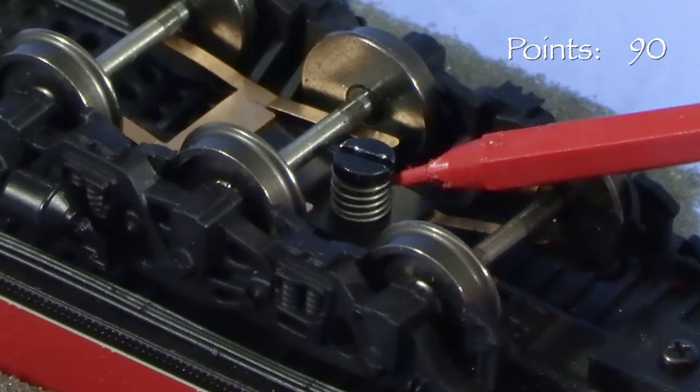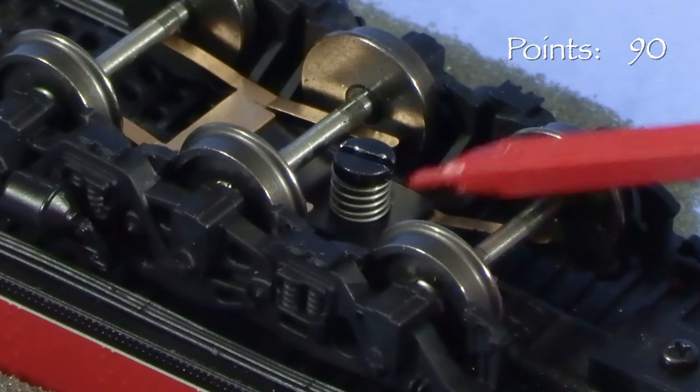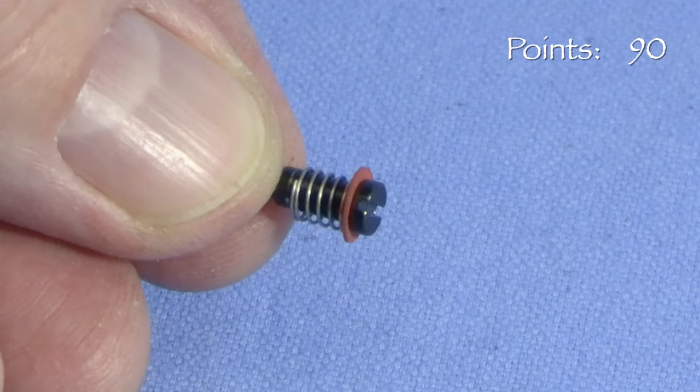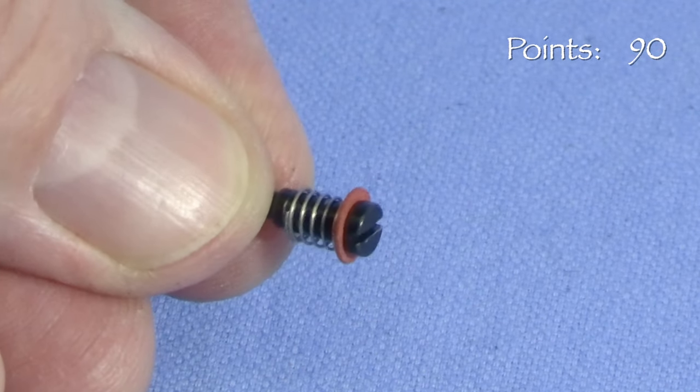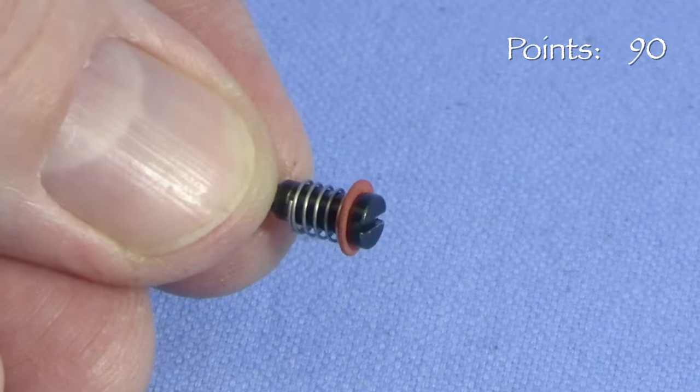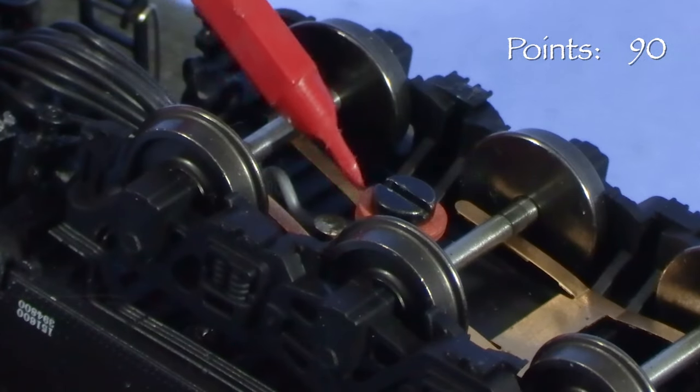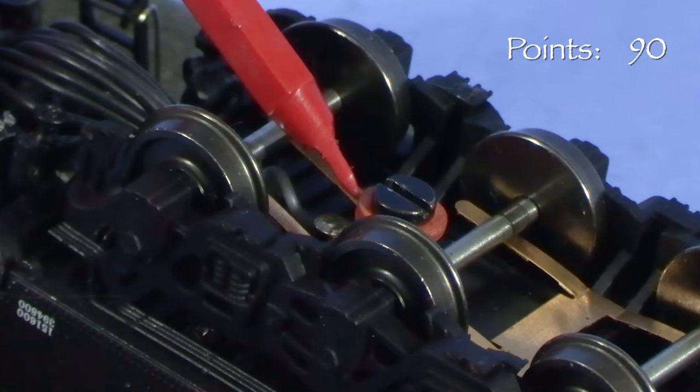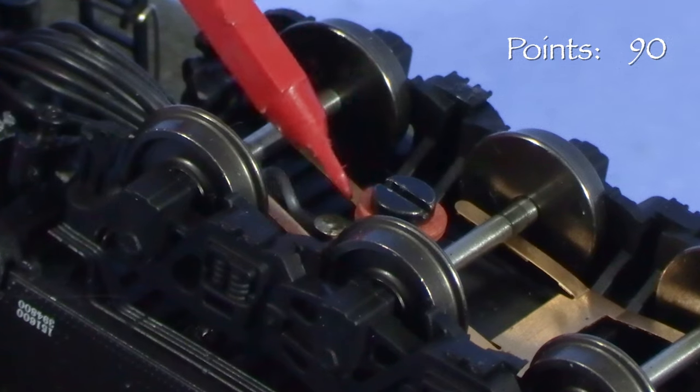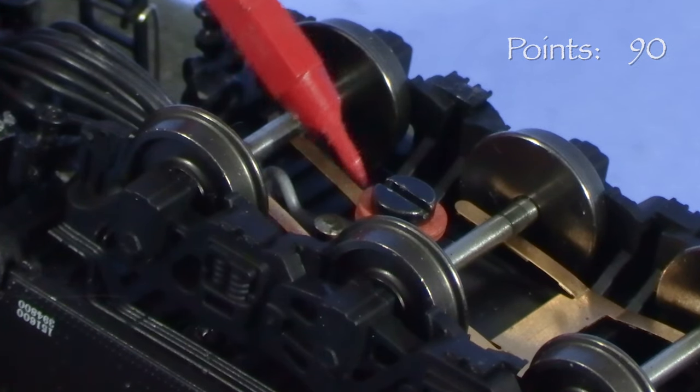The tender trucks are held in with a screw and a spring. The screws are already in as far as they will go, so tightening them to reduce the wobble won't work. I decided to try using a Kadee washer to compress the spring a little more and hopefully hold the truck a little tighter. I ended up using two washers. The tender wobble is reduced, though not completely eliminated. It's probably enough to keep it from being noticeable when the model runs.